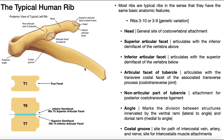On the inferior surface of the rib, we have a very large costal groove that continues along the rib. That costal groove is a site for the intercostal veins, arteries, and nerves to traverse along the rib as they make their way to various muscles like the intercostal muscles. It's also a site for the attachments of the intercostals — external, internal, and innermost intercostal.